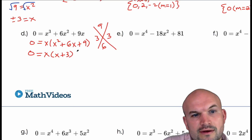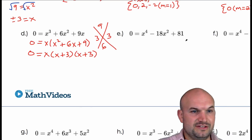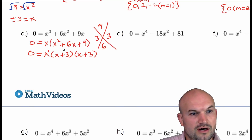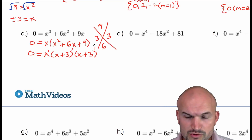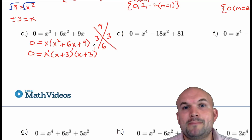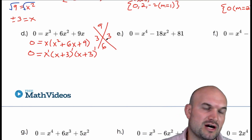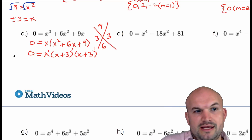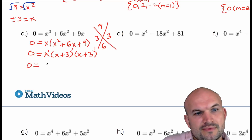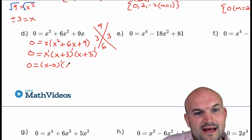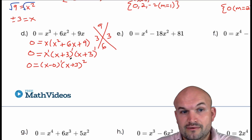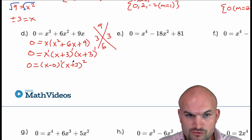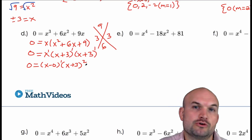The first term is a perfect square, the last term is a perfect square, and the middle term is two times the square root of both terms. So factoring gives us (x + 3)(x + 3). Now the key point about multiplicity: multiplicity is the repetition of zeros. (x + 3) appears twice, so it's (x + 3) squared, meaning the zero of negative 3 is repeated — that is what multiplicity means.